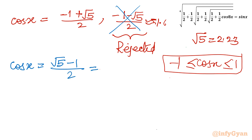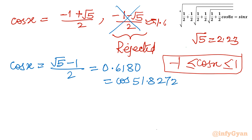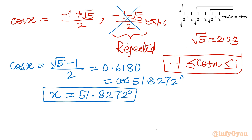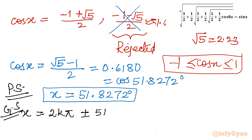So cos x = (√5 − 1)/2 ≈ 0.6180, which equals cos(51.8272°). For the principal solution, x = 51.8272°. For the general solution, we write x = 2kπ ± 51.8272°. However, the minus sign will be rejected because it corresponds to the 4th quadrant solution, which is an extraneous solution introduced by squaring.